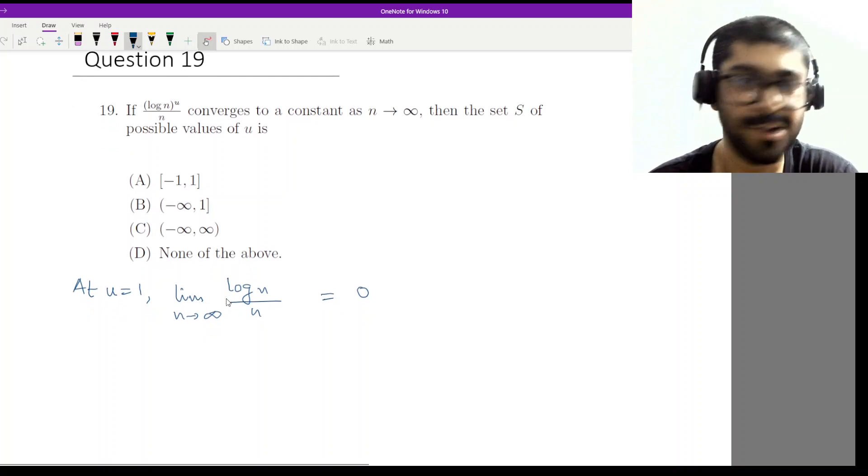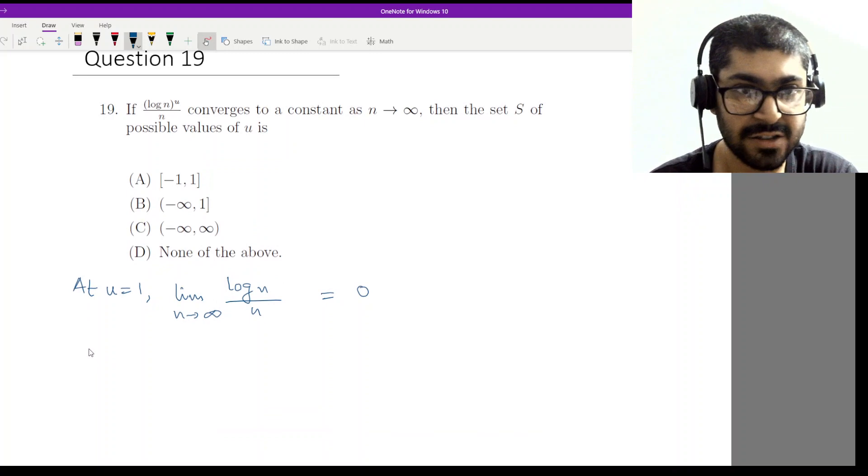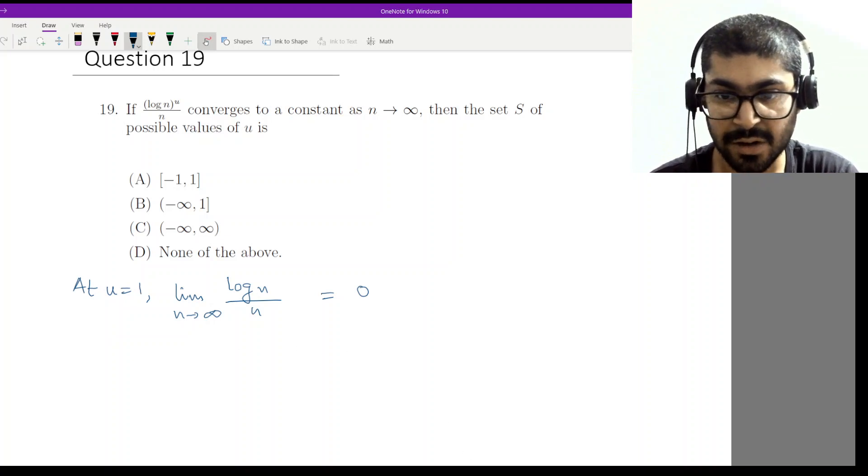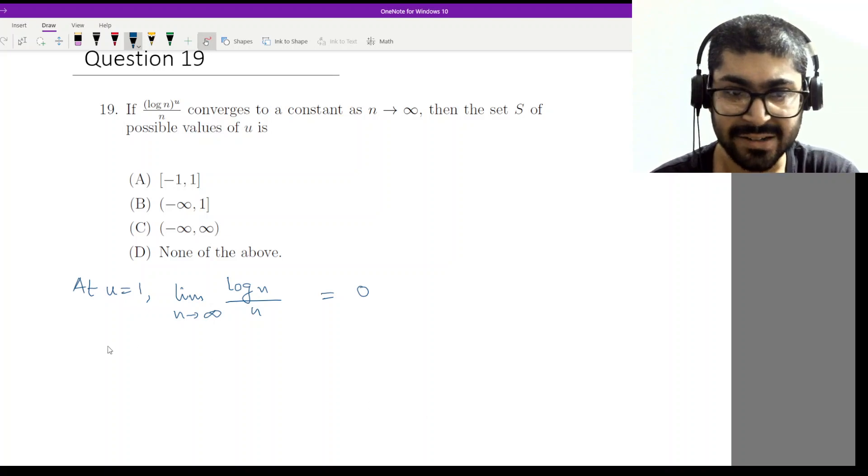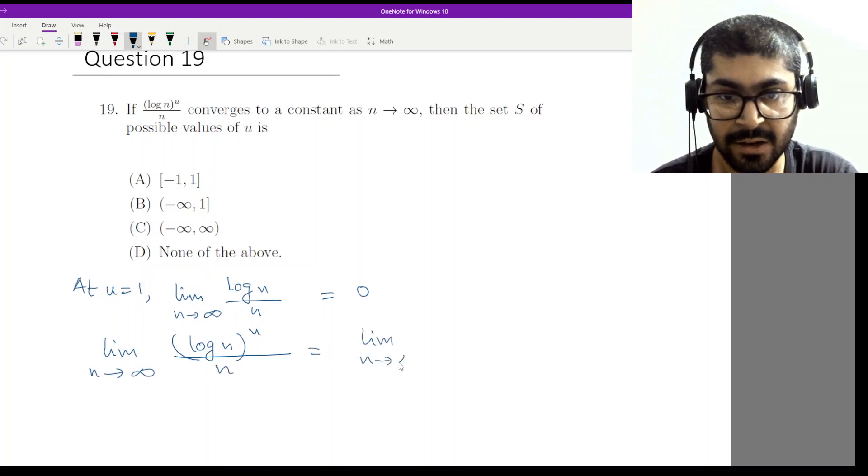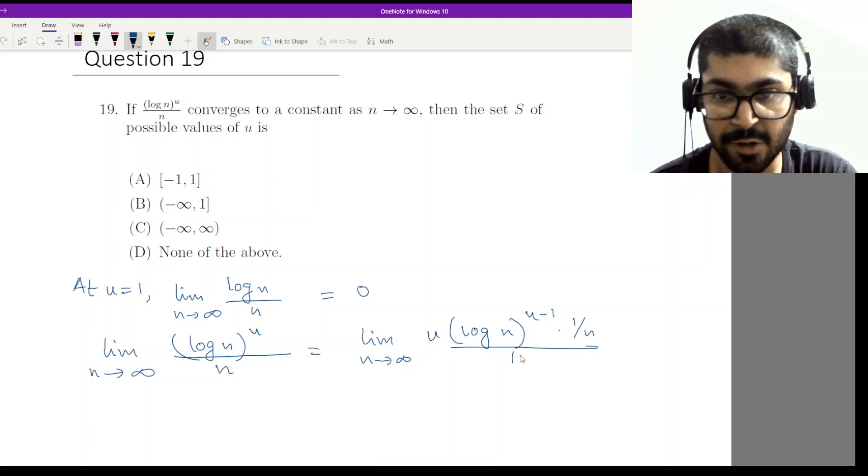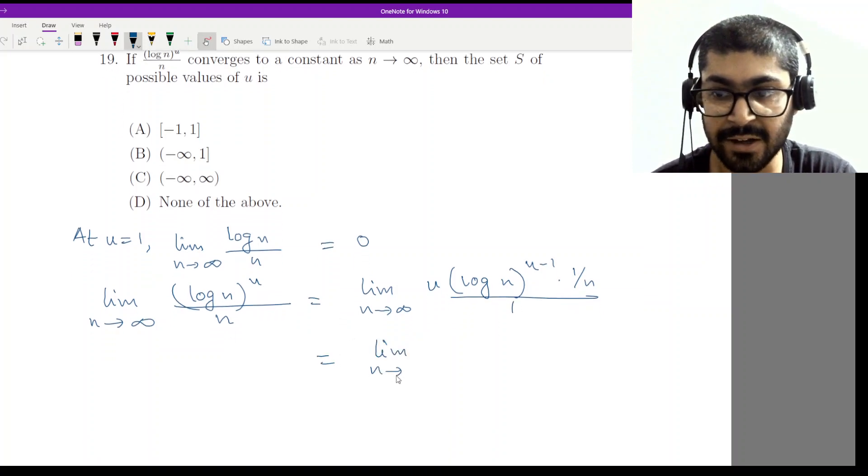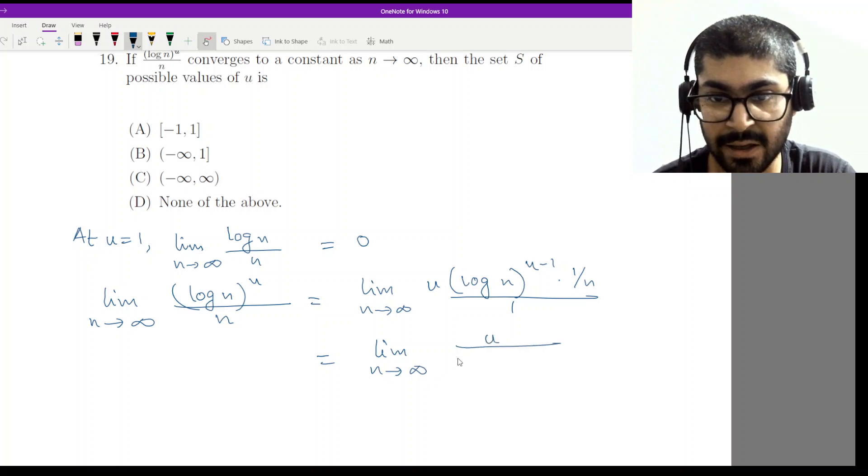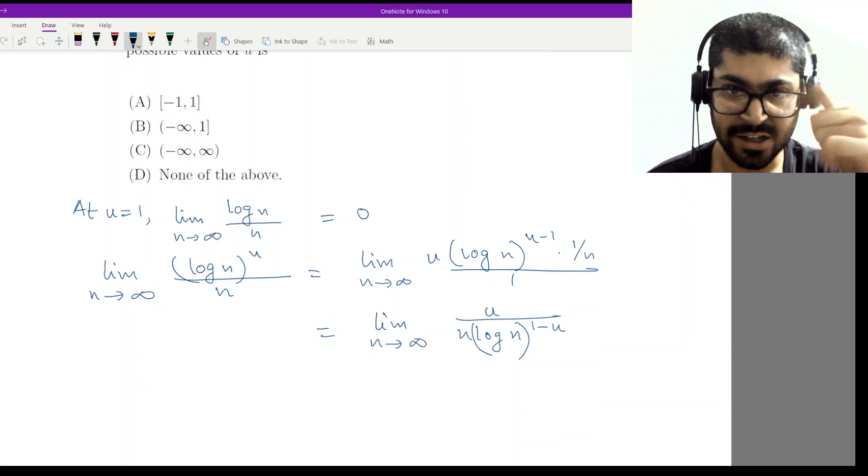Now what happens if u is not equal to one? In that case, this original limit will still be in the form of infinity by infinity, and we can apply L'Hospital's rule. So we will be applying L'Hospital's rule to limit n tends to infinity log n to the power u by n. We will end up with limit n tends to infinity u log n to the power u minus 1 into 1 by n and 1 in the denominator. So this will get solved to limit n tends to infinity u by n log n to the power 1 minus u.